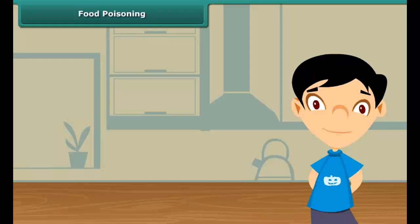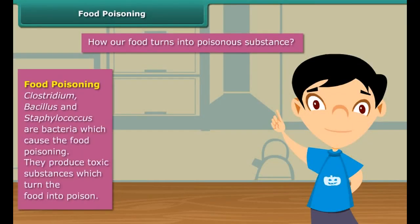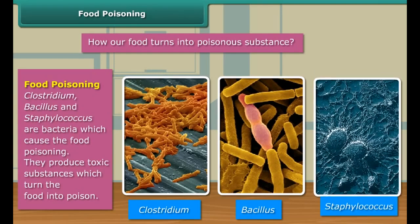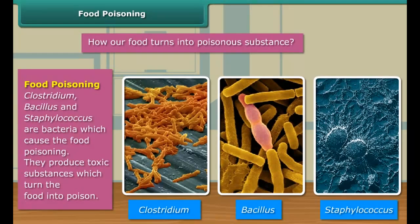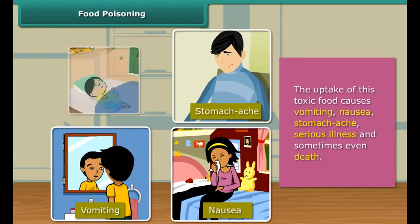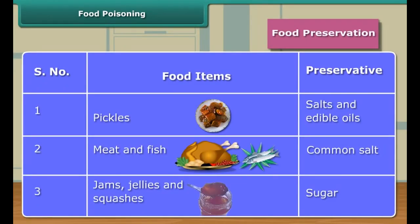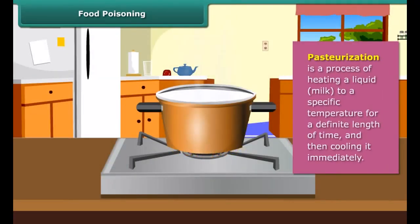In summer, if food is left in the open for a longer duration, the food turns stale and finally becomes a poisonous substance. The cause of this is bacteria — some bacteria like Clostridium, Bacillus, and Staphylococcus cause food poisoning. This contaminated food can harm us. We can preserve our food by several methods, and we use the pasteurization process to preserve milk.